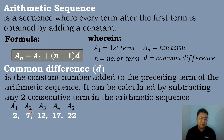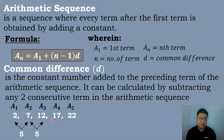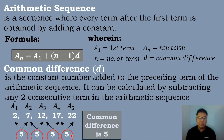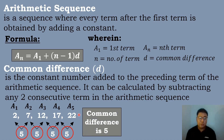So a sub 2 minus a sub 1, which is 7 minus 2, is equal to 5. A sub 3 minus a sub 2: 12 minus 7 is equal to 5. A sub 4 minus a sub 3, which is 17 minus 12, is equal to 5. And a sub 5 minus a sub 4, which is 22 minus 17, is equal to 5. So the value of the common difference is equal to 5.